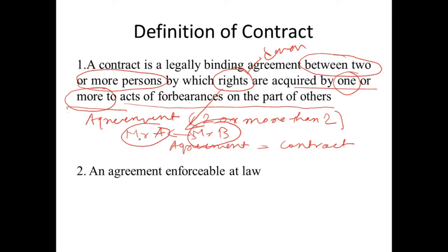Forbearance means to refrain, to stay away from something — the right to refrain from doing a particular thing. Within this agreement, one or both parties acquire such a right. Such an agreement — such a resolution — is called a contract.